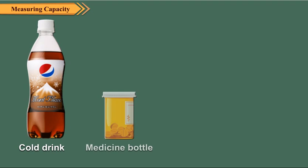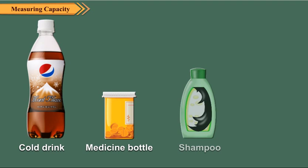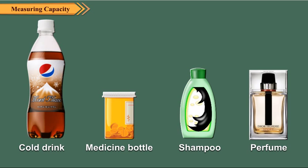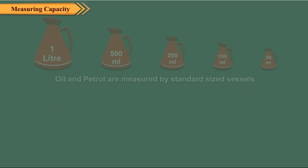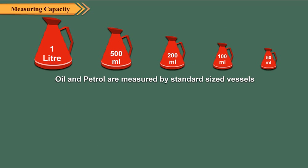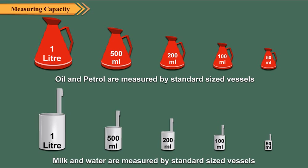Cold drinks, medicinal liquids, shampoos, perfumes, etc. in small bottles are measured in milliliters. Liquids like oil and petrol are measured with the help of a standard sized vessel shown here. Liquids like milk and water are measured with the help of standard sized vessels which are shown here.